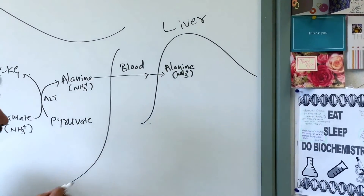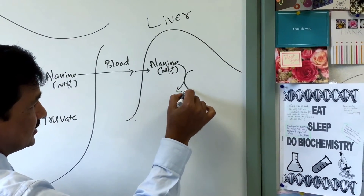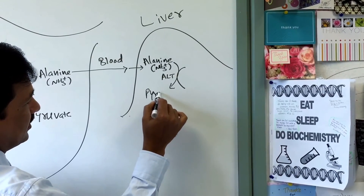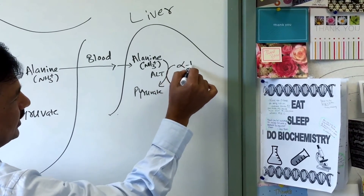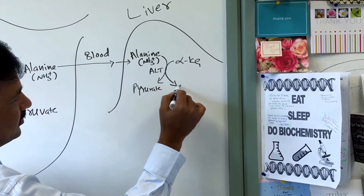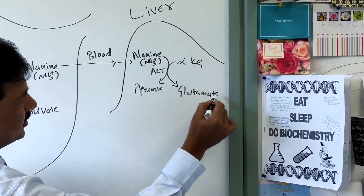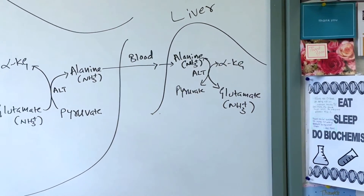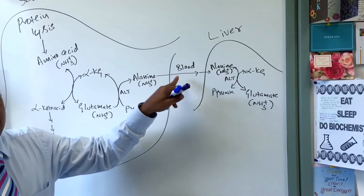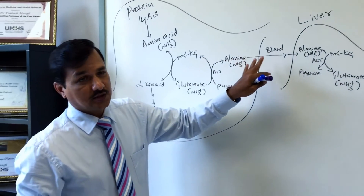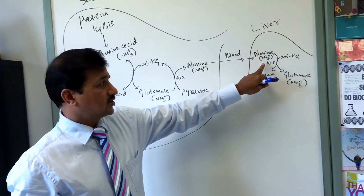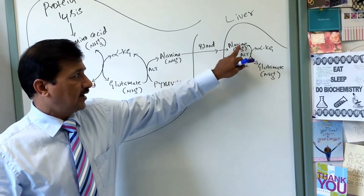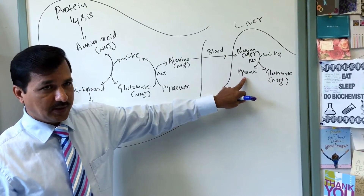In the liver, alanine undergoes transamination again, catalyzed by the same ALT enzyme. Alanine is converted back to pyruvate, while alpha-ketoglutarate in the liver accepts the amino group and is converted to glutamate. The amino group is now in glutamate in the liver. Next we will see what happens to both pyruvate and glutamate.